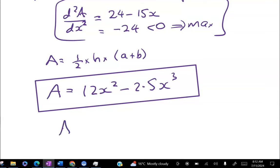So putting everything in, we get A = 12 times 3.2² - 2.5 times 3.2³, which gives me 40.96 centimeters squared.